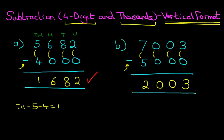So, 7,003 minus 5,000 is 2,003. And it really is that simple. The subtraction of a four-digit number and thousands using the vertical format.